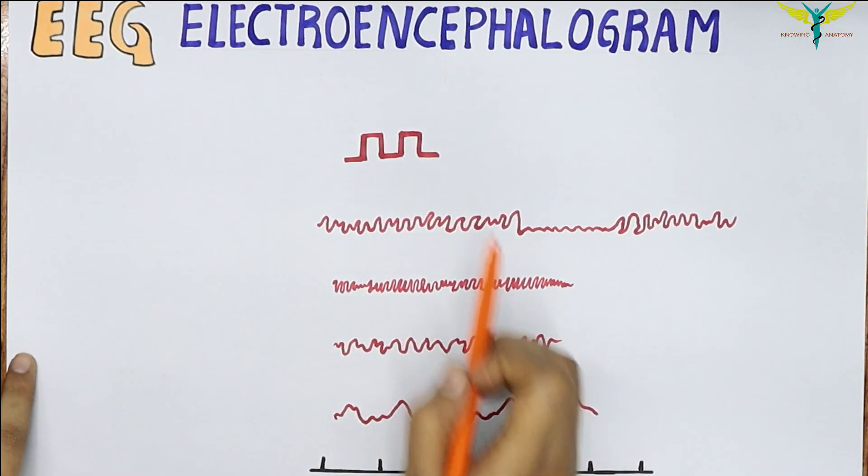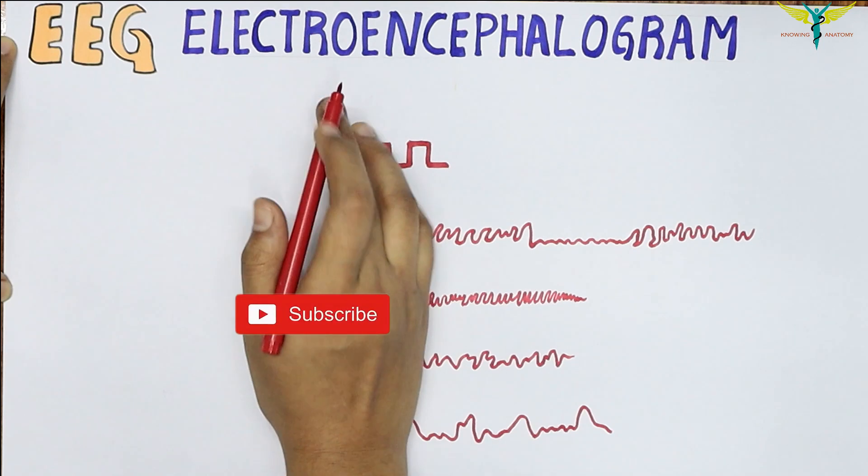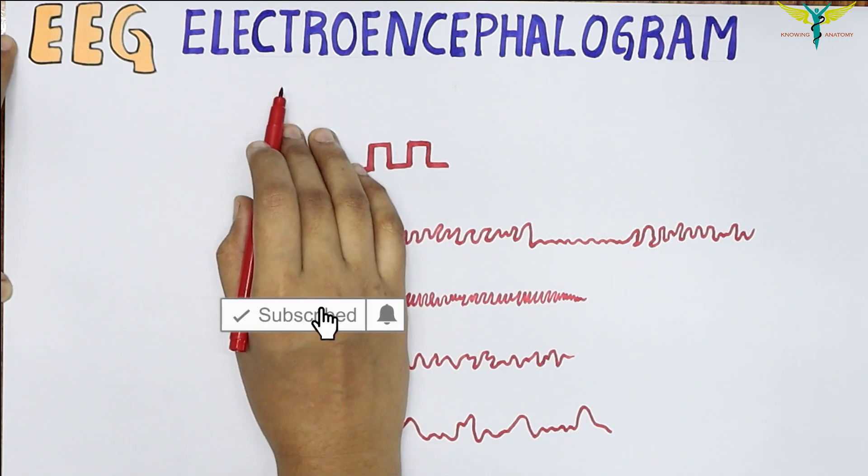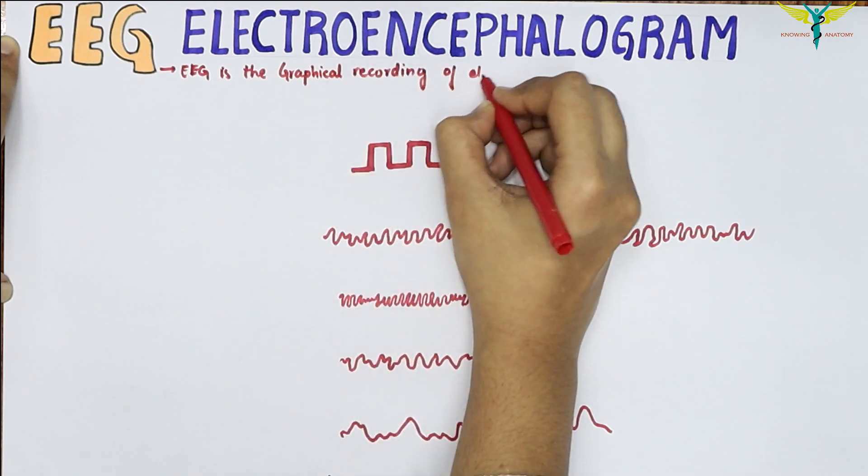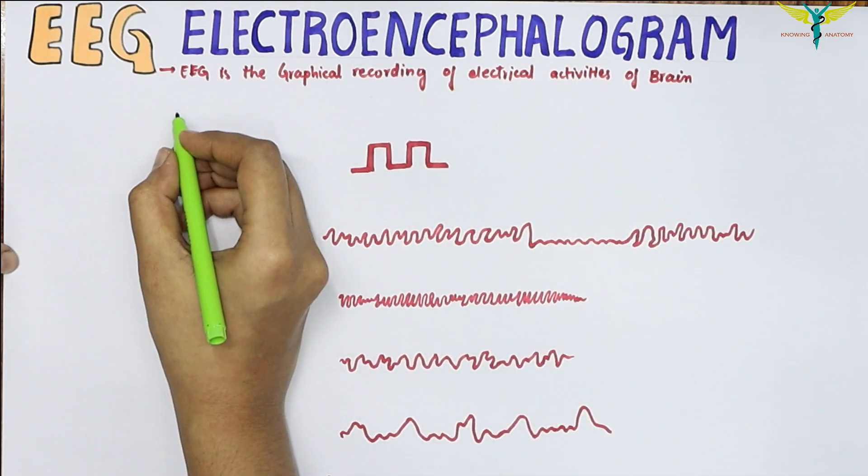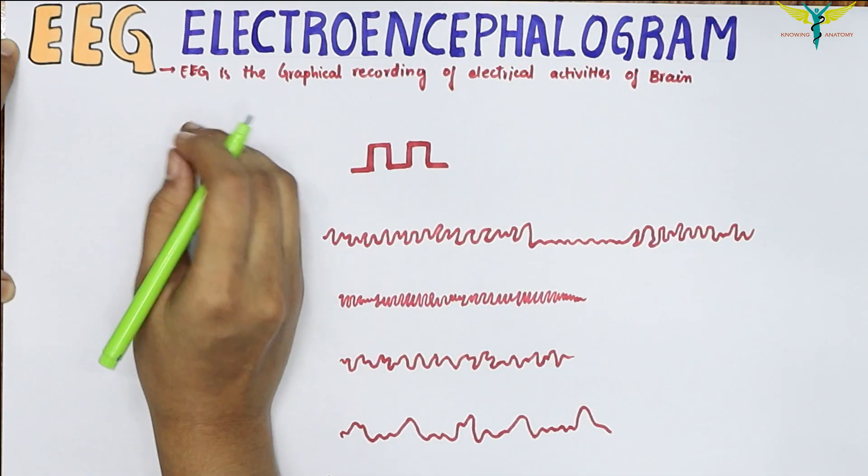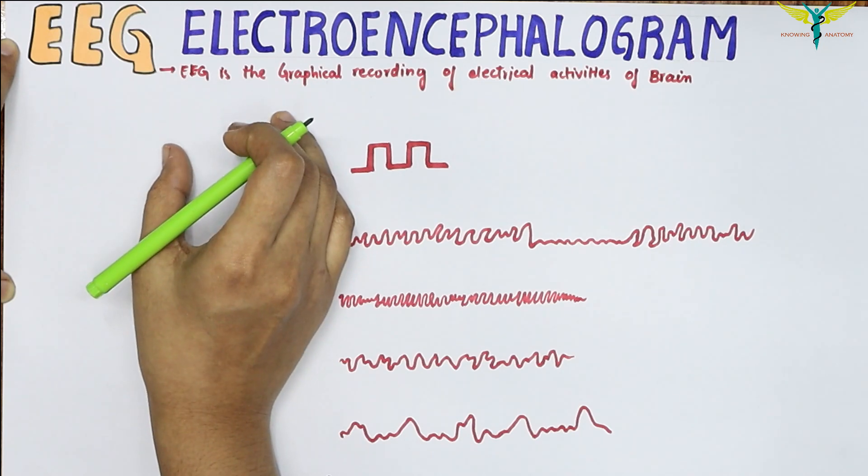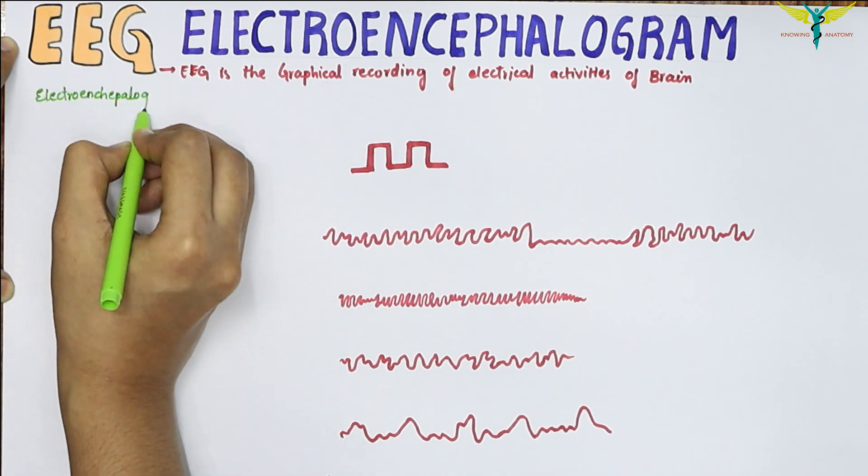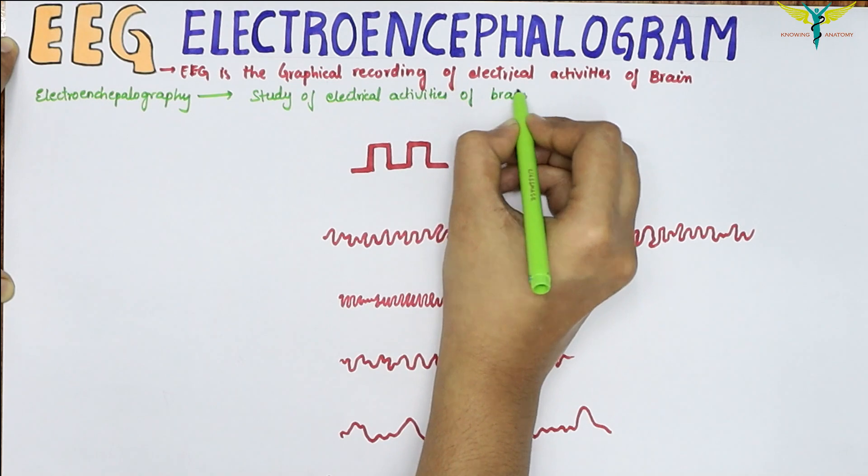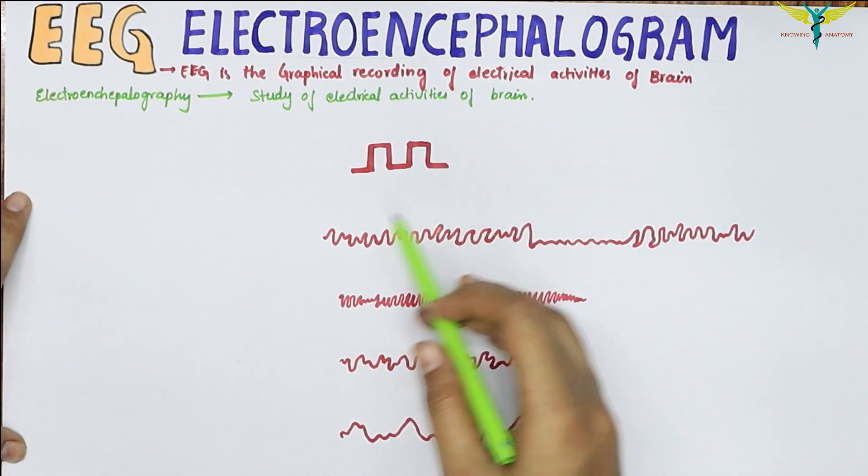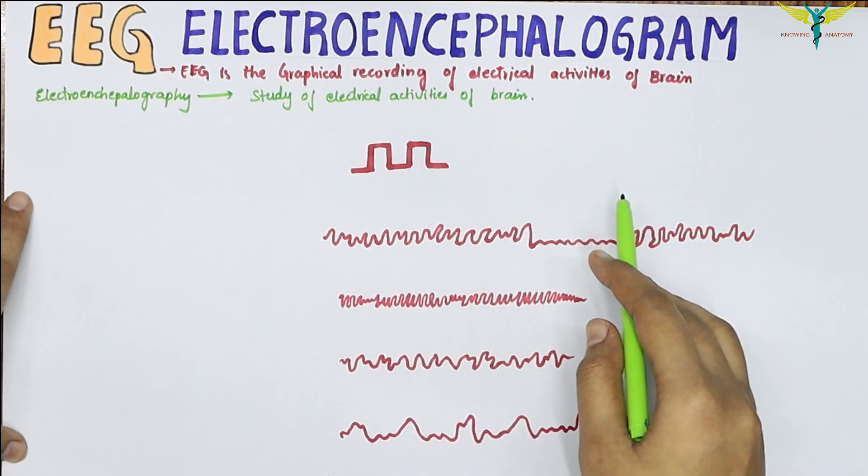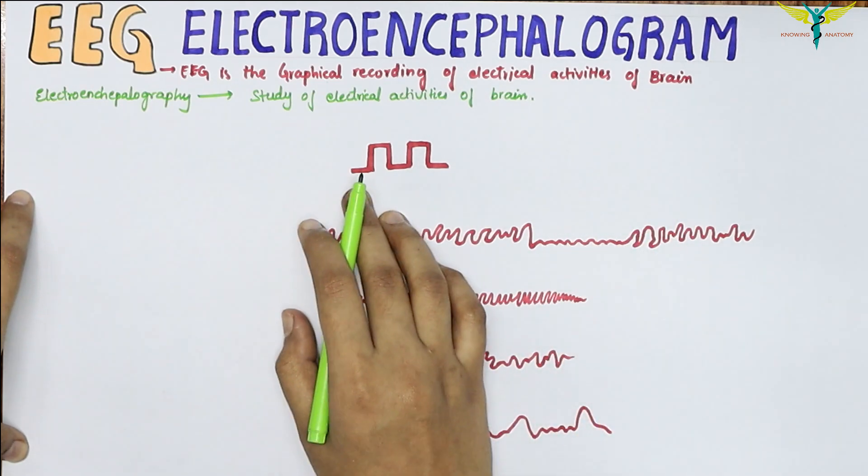In this video, let's learn about the electroencephalogram. The electroencephalogram is the graphical recording of the electrical activities of the brain. Electroencephalography is the study of the electrical activities of the brain. The electrical activity of the brain is much more complicated when compared to that of a single nerve fiber or neuron, due to the involvement of a large number of neurons and synapses.